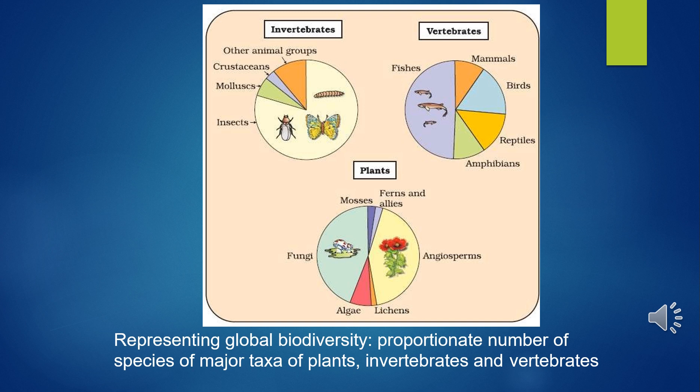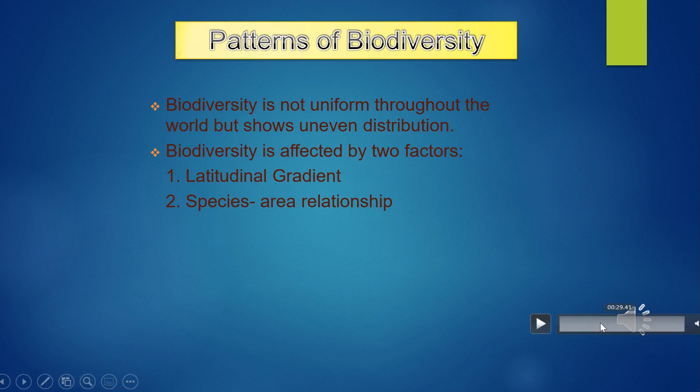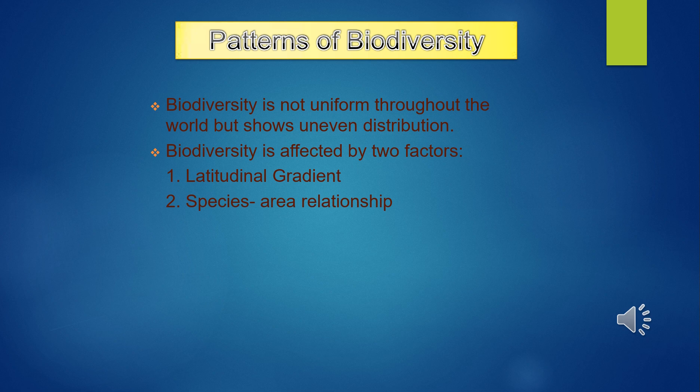We can say that nature's biological library is burning even before we have catalogued the titles of all the books stocked there. The patterns of biodiversity show that the diversity of plants and animals is not uniform throughout the world but shows a rather uneven distribution. For many groups of animals or plants, there are interesting patterns in diversity, the most well known being the latitudinal gradient in diversity.